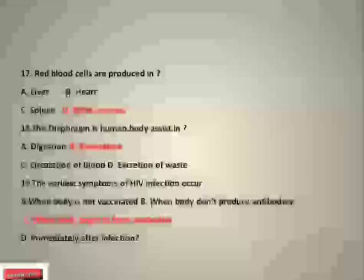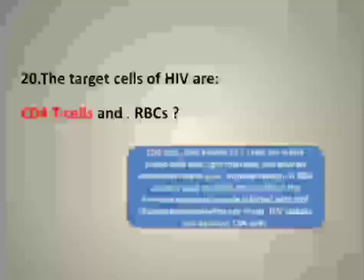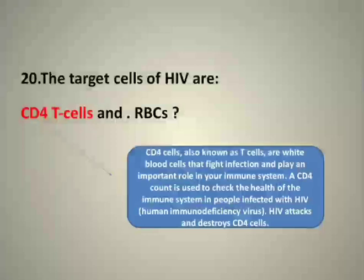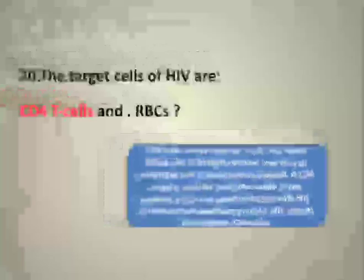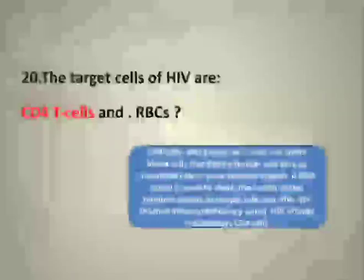The earliest symptoms of HIV infection occur when the body begins to form antibodies. The target cells of HIV play an important role in the immune system. A CD4 count is used to check the health of the immune system in people infected with HIV. HIV is abbreviated as human immunodeficiency virus; HIV attacks and destroys CD4 cells.